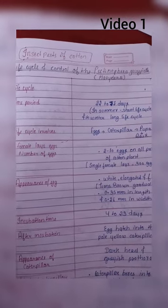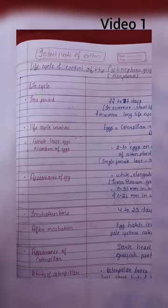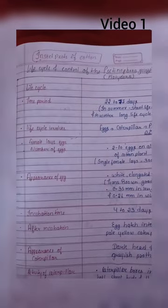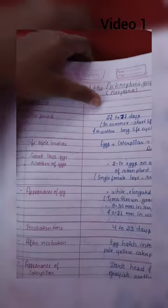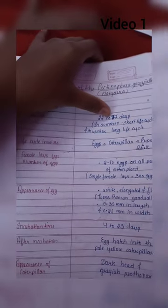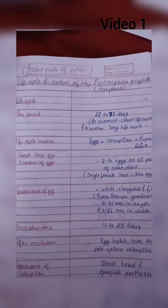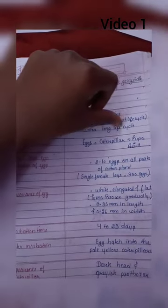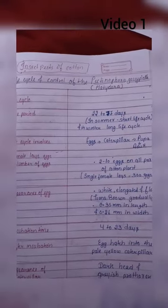It's called Platyedra. So life cycle - the entire life cycle period is adult to adult. Its full lifetime is 22 to 77 days. In summer, this time period is slightly less than 50 days. Winter is approximately 80 days, so winter has a long life cycle because it takes a long time.